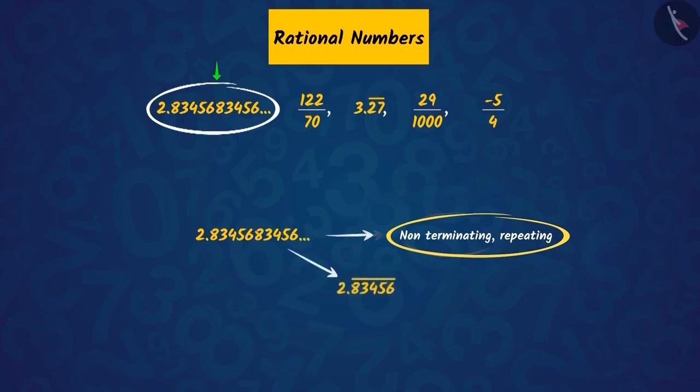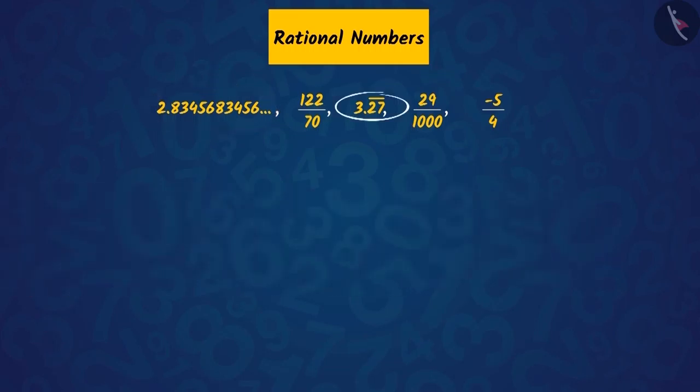We can also write this number in this way by putting a bar. What do you understand by this bar above the digits? This bar above the digits represents the group of digits that are recurring. Like in this number, the digits 2 and 7 are recurring. So, the decimal expansion of this rational number will be non-terminating, repeating.